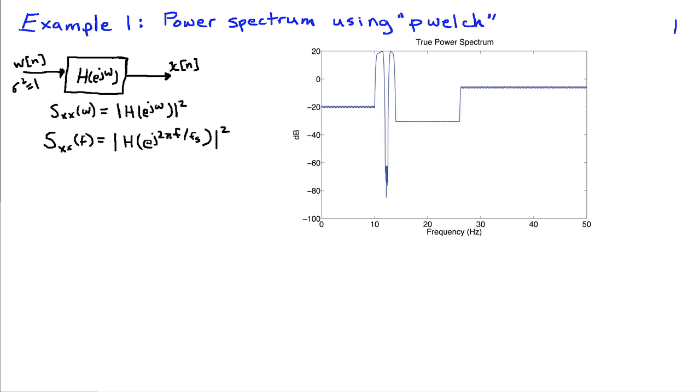So the example I'm going to use involves estimating the power spectrum with the pwelch command in MATLAB, and will generate data using a linear time invariant system where we pass white noise through this system to obtain data x(n) that we wish to estimate the power spectrum for. Now since the white noise we're going to assume has unit variance, then the power spectrum at the output of this system is just given by the magnitude squared of the frequency response of the system. Or if we express this in units of hertz, we're just going to have again the magnitude response squared with the frequency normalized by the sampling frequency.